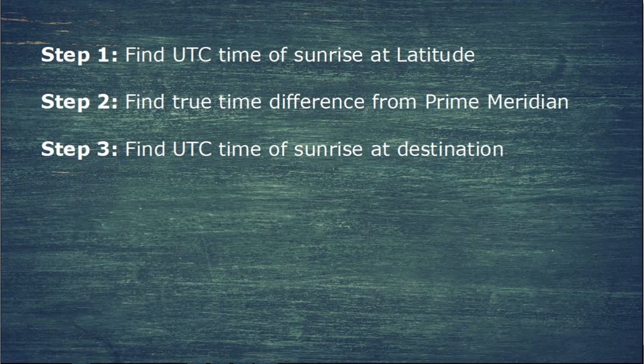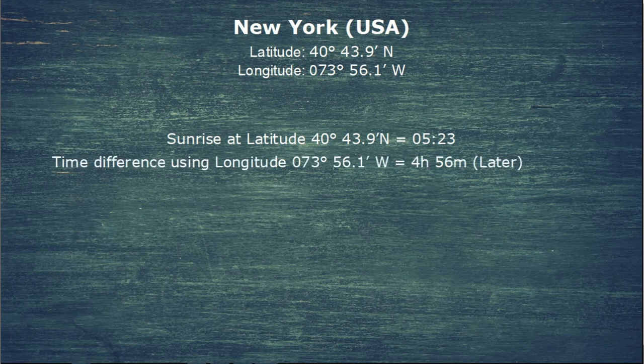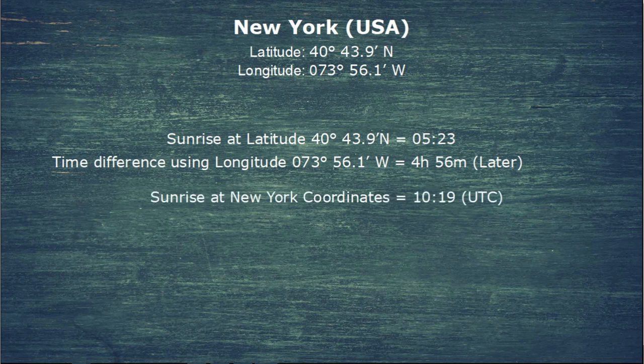Next, we find the universal time of sunrise at our destination by applying that time difference to the UTC time from the Almanac. The sun rises at our latitude at 5:23 in Greenwich. But it's going to rise 4 hours 56 minutes later at our longitude of 73 degrees. Adding these together, in New York the sun will rise at 10:19 universal time.